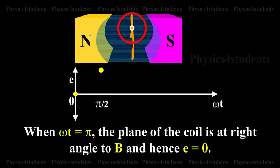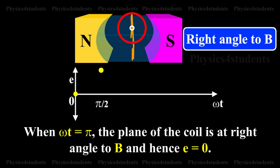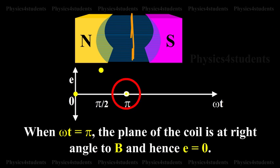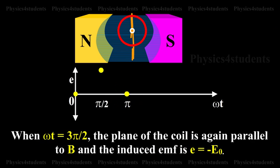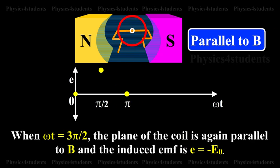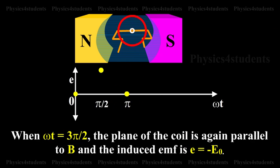When ωt = π, the plane of the coil is at right angle to B and hence E = 0. When ωt = 3π/2, the plane of the coil is parallel to B and the induced EMF is E = -E₀.